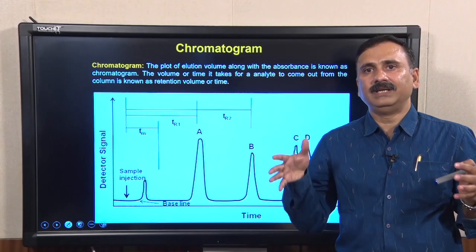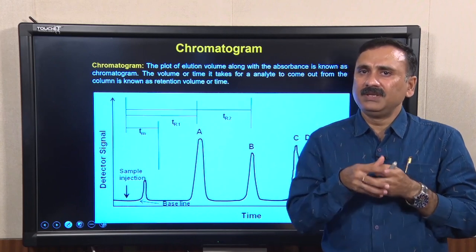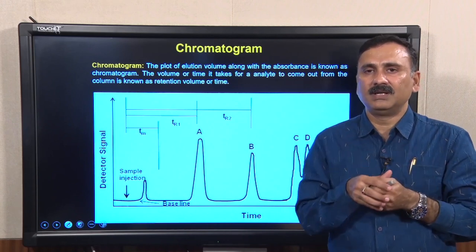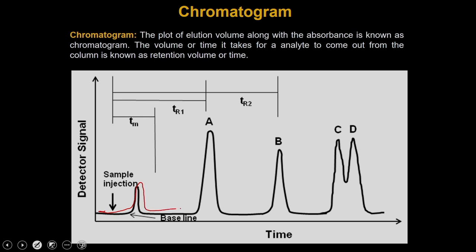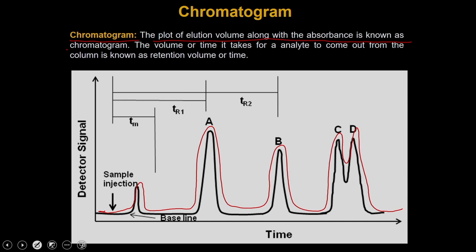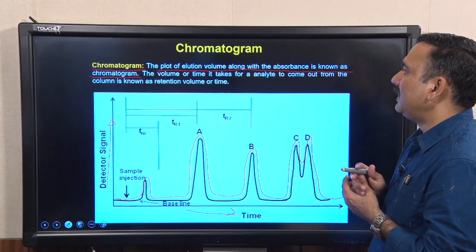Once you monitor the elution of molecules from the column using any parameter such as absorbance, you will see a pattern of multiple peaks called a chromatogram. The chromatogram is a plot of elution volume against detector signal — which could be absorbance, fluorescence, or refractive index. On the Y-axis you put the detector signal, and on the X-axis you put the elution volume or elution time.